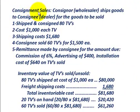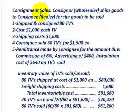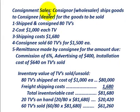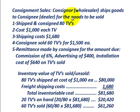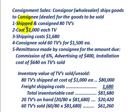What we're going to be going over here is just a brief example of consignment sales. This is where the consignor or the wholesaler or the manufacturer ships goods to a consignee or a dealer for these goods to be sold by the consignee or the dealer.